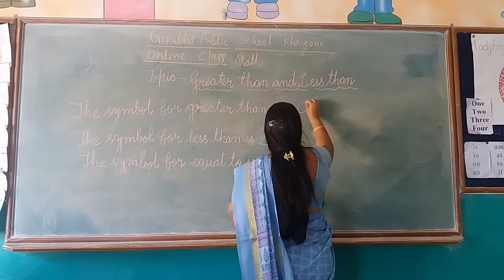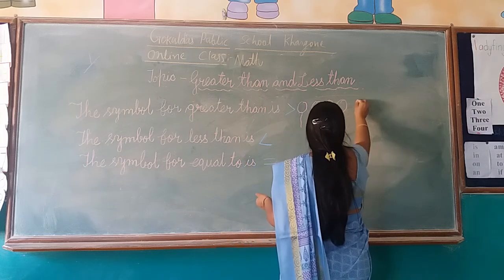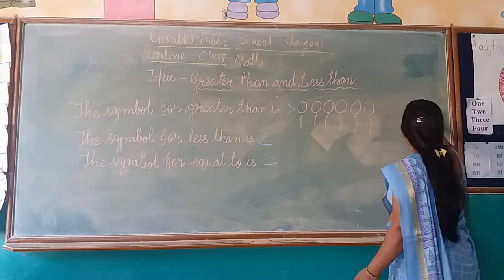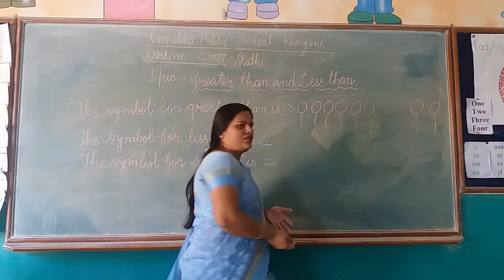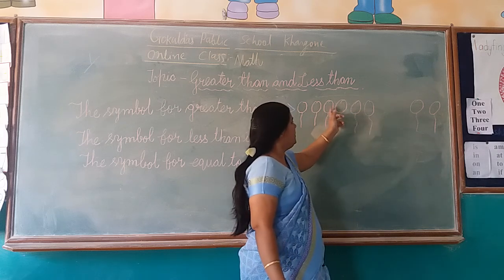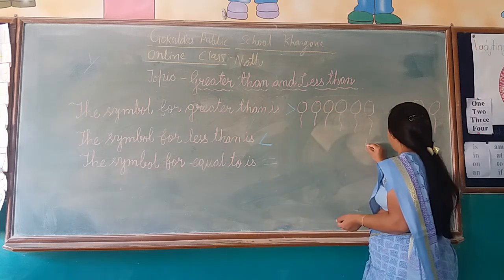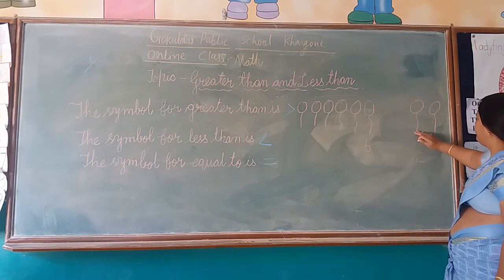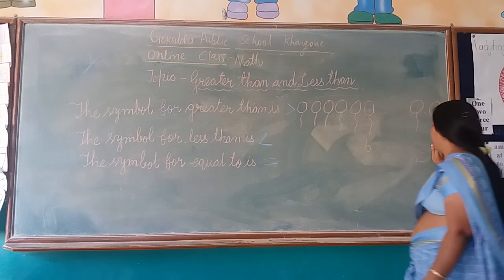First I will draw some pictures for you — these are pictures of some balloons I am drawing. Here and this side also. Now we will count how many balloons I have drawn: 1, 2, 3, 4, 5 and 6. So I will write number 6 over here. Then here 1 and 2 — this side only we have 2 balloons, so I will write number 2.